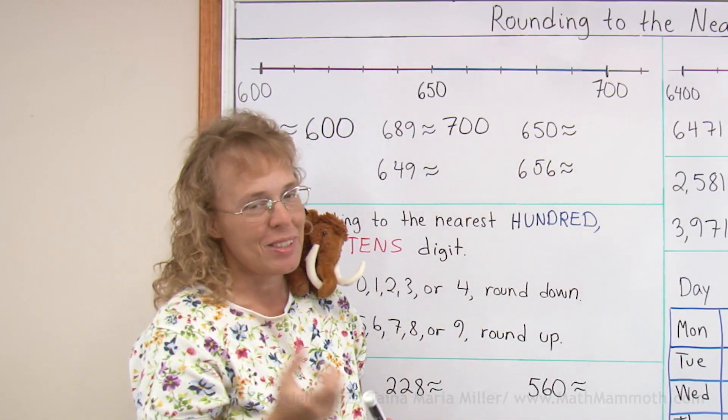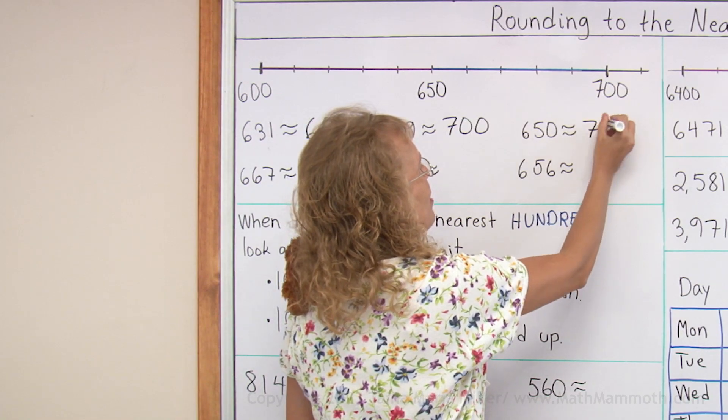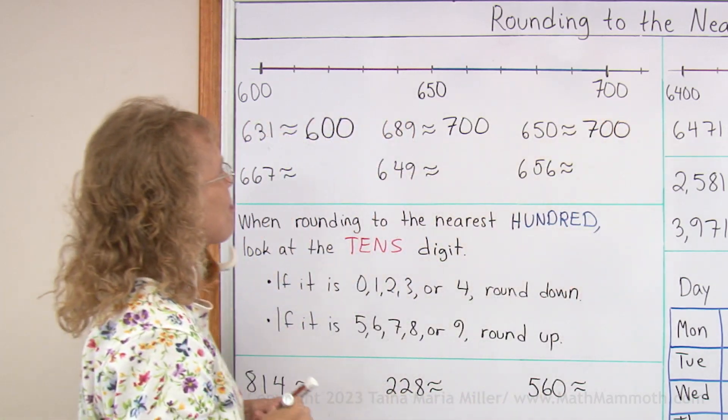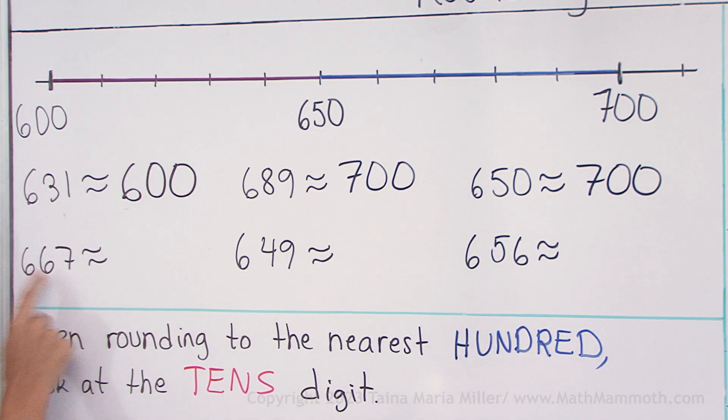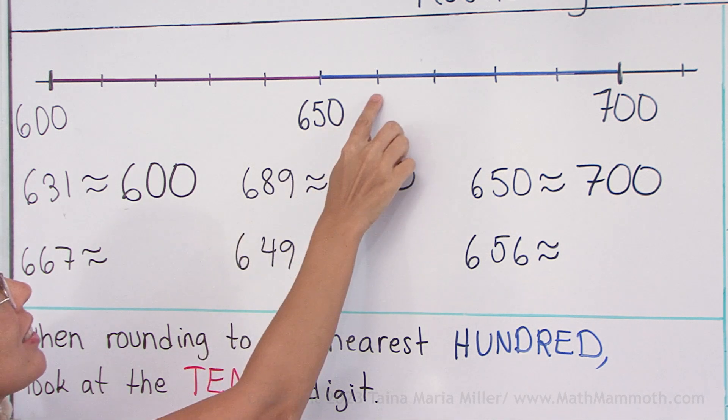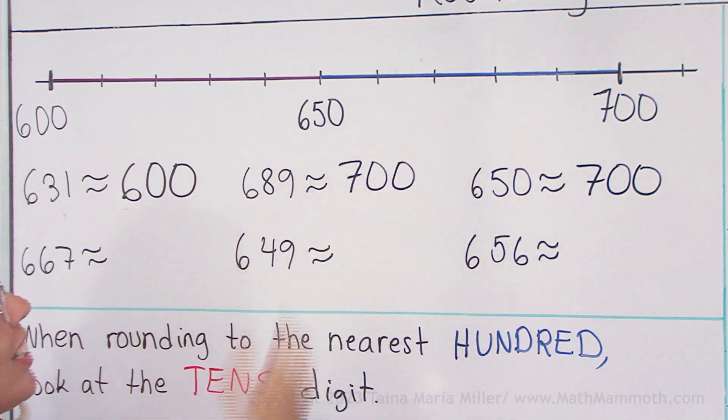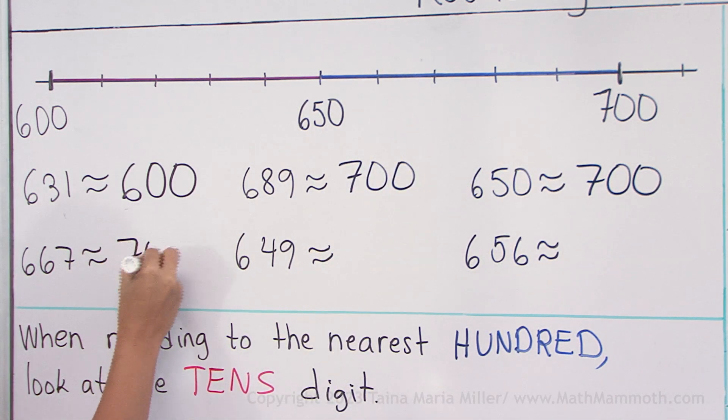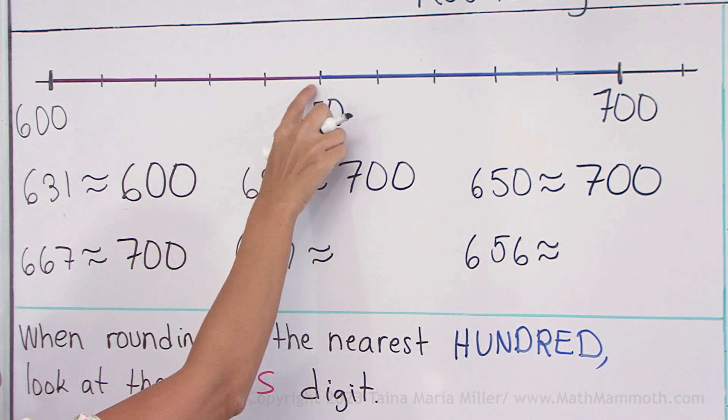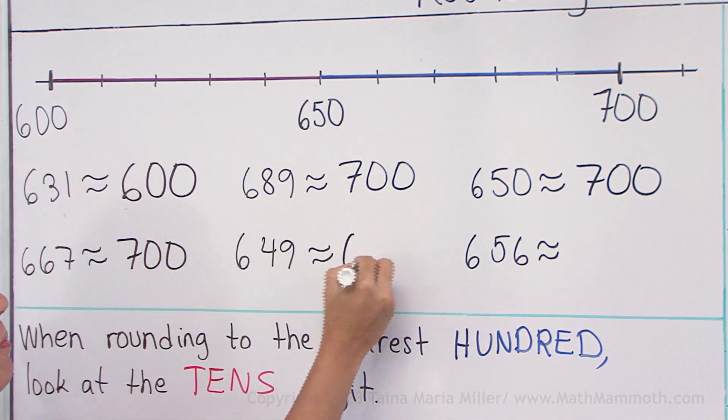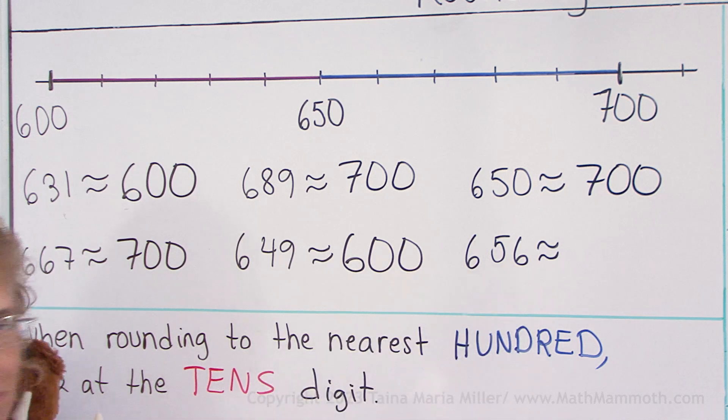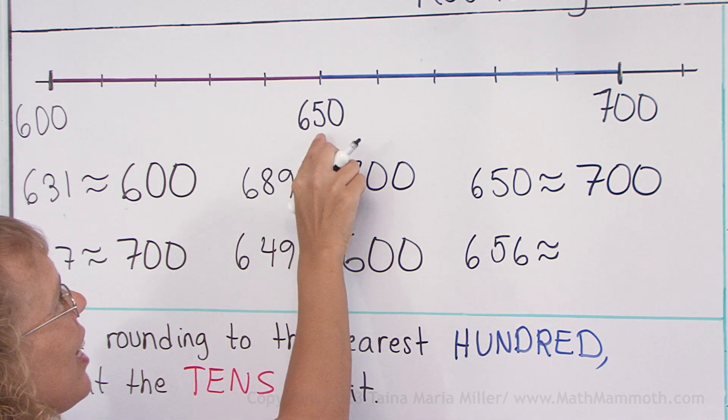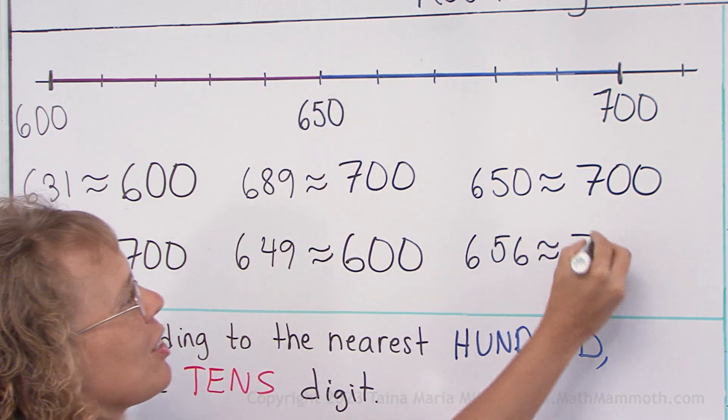650, I just told you it gets rounded up to the next whole hundred, 700. And then 667. Okay, here's 660, it's somewhere there, again round up. This one, it's right there, gets rounded down. And this one, okay, it's past 650, so round up.